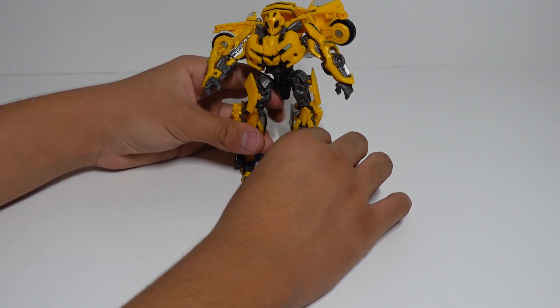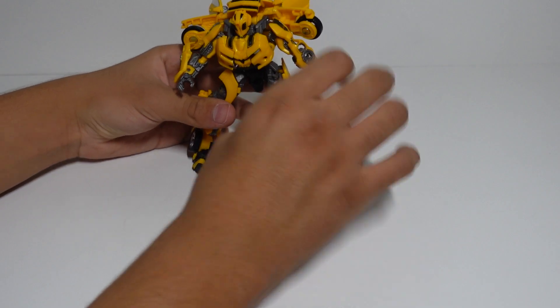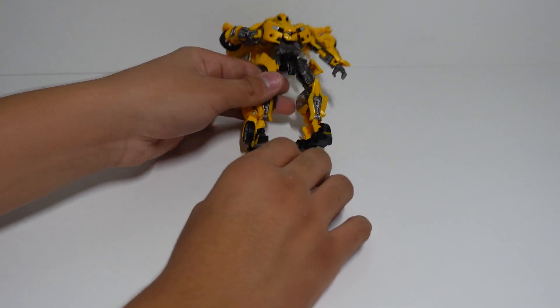Now your Bumblebee is complete. Now, if you have Optimus Prime and the other Autobots from movie number one, you can showcase them right here, right next to Bumblebee. And it'll look pretty, pretty darn cool.